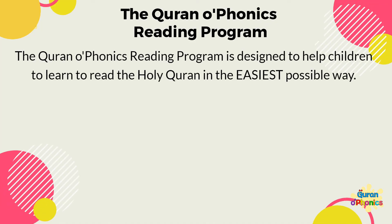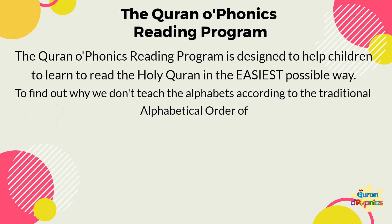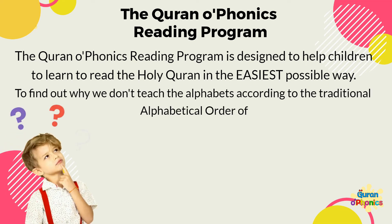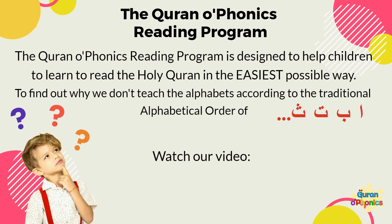The Quranophonics Reading Programme is designed to help children to learn to read the Holy Quran in the easiest possible way. To find out why we don't teach the alphabets according to the traditional alphabetical order of Alif, Ba, Tha, watch our video: Why not Alif, Ba, Tha?